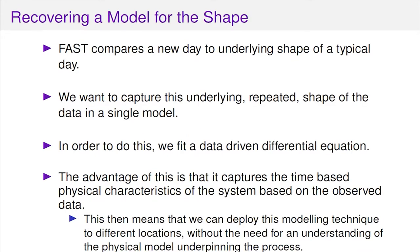The method is all about the underlying shape for the data, and FAST compares a new day to the underlying shape of a typical day. We want to capture that underlying shape in a single mathematical model. To do that I'm going to fit a data-driven differential equation - data-driven meaning I'm only using the data given to me, no expensive physical modelling, no assumptions about the physics of the process. It's a non-parametric method. The advantage is it captures the time-based physical characteristics of the system, so you don't need to do separate modelling at different locations.